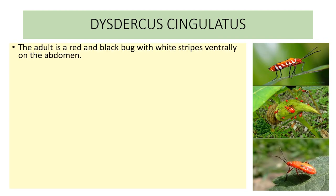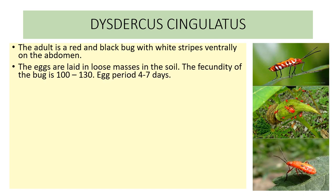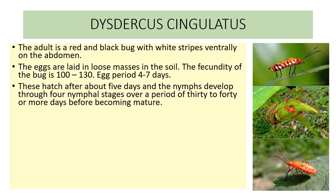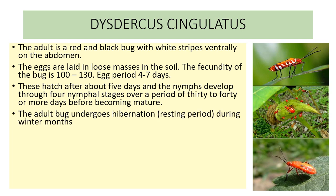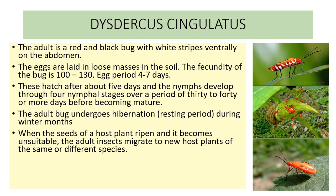The bacterium Nematospora gossypii enters the site of injury and stains the fiber. The adult is a red and black bug with white stripes on the abdomen. The eggs are laid in loose masses in the soil. The fecundity of the bug is 100 to 130 and the egg period is 4 to 7 days. The eggs hatch after about 5 days and the nymphs develop through 4 nymphal stages over a period of 30 to 40 or more days before becoming mature. The adult bug undergoes hibernation, i.e., a resting period during the winter months.